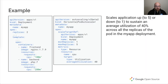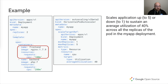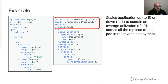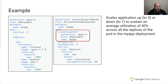Here we have our MyApp deployment. It's set with two replicas to start, and two containers within the pod: a front-end container with 100 millicores requested and a back-end container with 200 millicores requested. We have our corresponding horizontal pod autoscaler object. It targets our MyApp deployment via the scale target ref — you can see the matching API version, kind, and name.